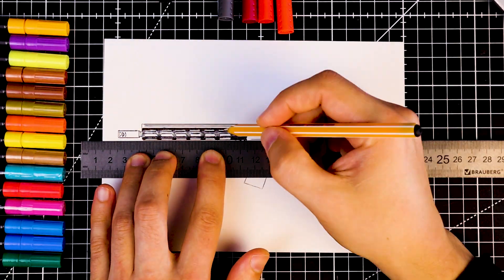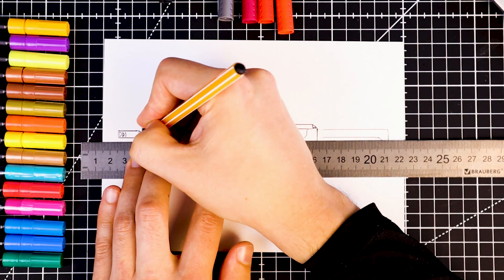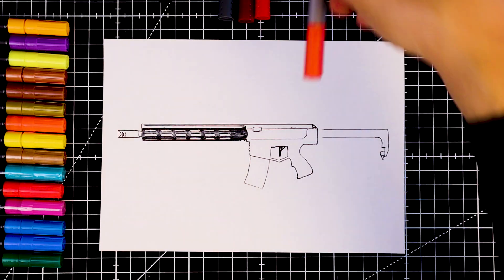Let's make this part a little thicker. The barrel inside the handguard will be red.